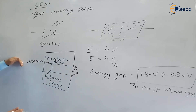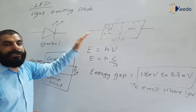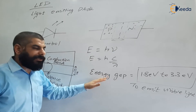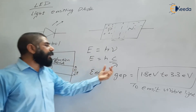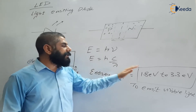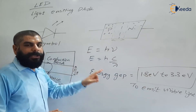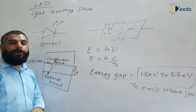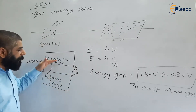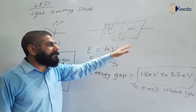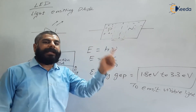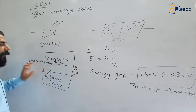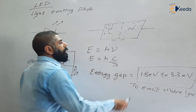Key points to remember: LED emits light because of recombination of electron-hole pairs. In terms of the energy band diagram, when an electron jumps from the conduction band to the valence band, it emits energy. To emit light in the visible range, the energy gap should be 1.8 to 3.3 eV. For a normal PN diode, the energy gap is around 1.1 eV, so the same recombination process occurs but no light is emitted. The condition to be used as an LED is that the energy gap must be more than 1.1 eV.